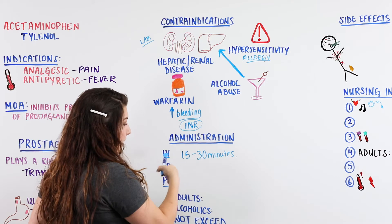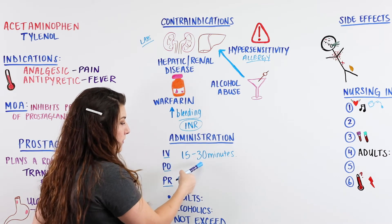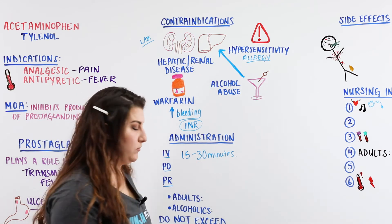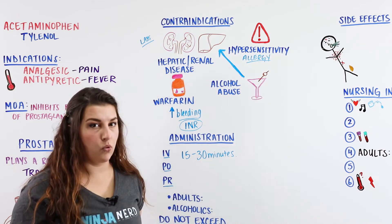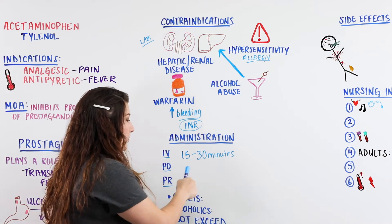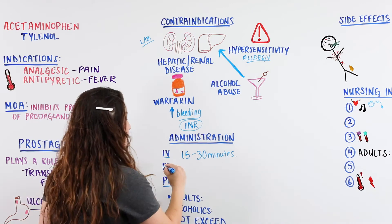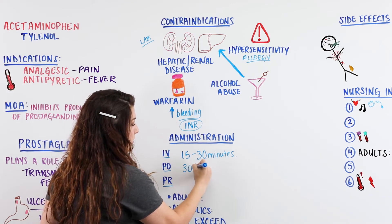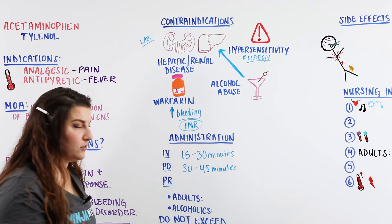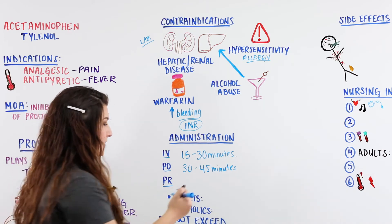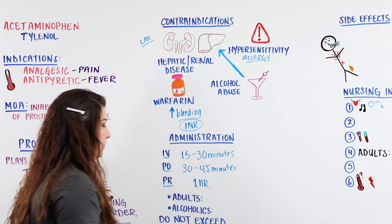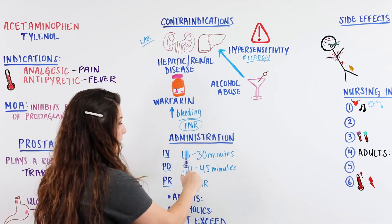When giving Tylenol to patients via IV, I typically tell them it's going to be about 30 minutes until they feel some pain relief. For PO (oral) — given as a pill or capsule — onset is a little longer at 30 to 45 minutes. For PR (rectal suppository), it takes even longer — up to an hour until we get some relief.